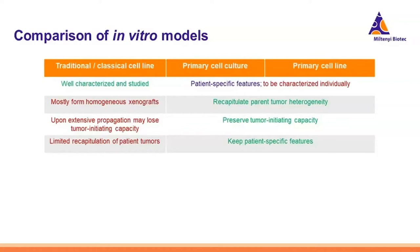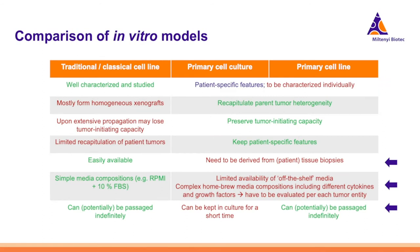Primary cells preserve tumor-initiating capacity, so you can always generate in vivo xenograft models from them — which is not always true for classical cell lines. They keep all patient-specific features, a plus for personalized medicine. Traditional cell lines are easy to get, simple to put in culture, and use basic media like RPMI or DMEM with 10–20% serum, making them inexpensive. However, serum is largely undefined, so you don't really know what you're putting into your in vitro model.